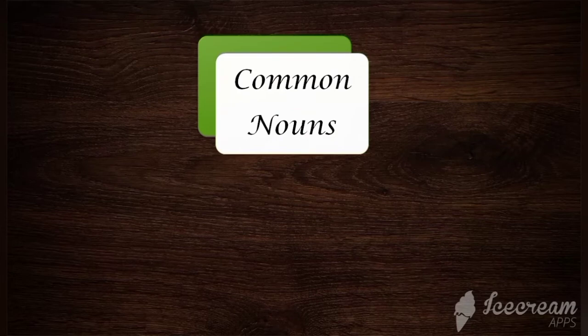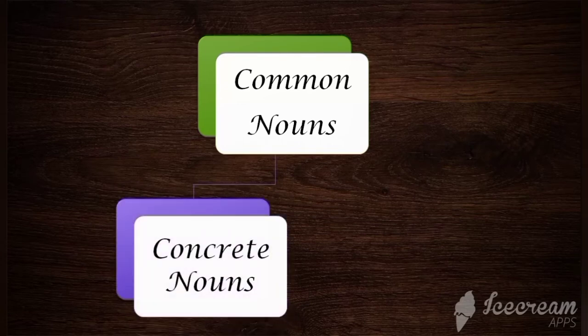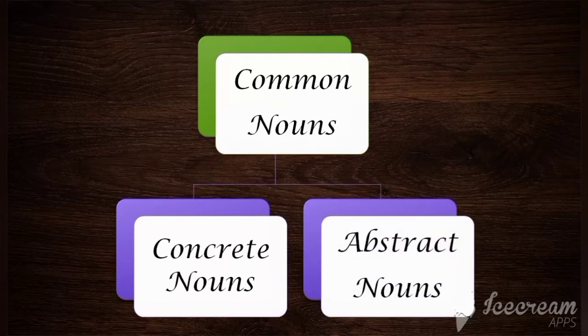Common noun is further divided into two: concrete noun and abstract noun. Keep in mind that noun is already divided into seven — proper, common, collective, material, countable, uncountable, and compound. And this common noun is further divided into two: concrete noun and abstract noun.